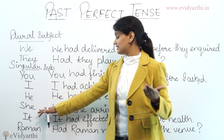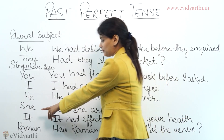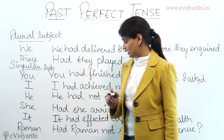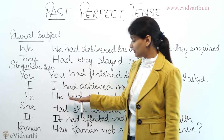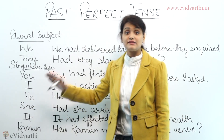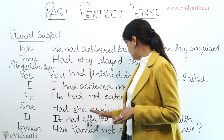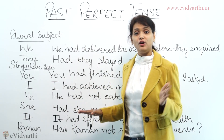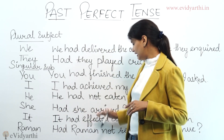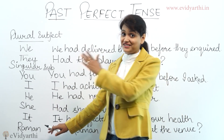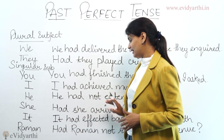Now a question sentence. For interrogative, the helping verb comes before the subject. 'Had she arrived?' — meaning had she reached? You can also add more context: 'Had she arrived before the train left?' Here 'had' comes first, then the subject 'she', then the third form of the verb 'arrived', then the rest of the sentence.